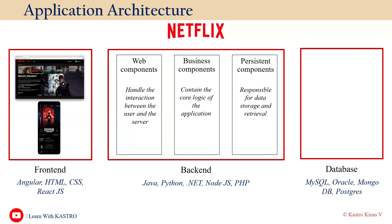In each stage, different types of developers are available, and different programming languages are used to develop the full scale of an application. That's the application architecture: it consists of front-end, back-end, and database, each developed by a separate set of developers using separate programming languages.